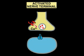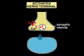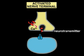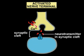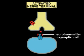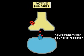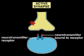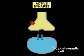The increased calcium in the nerve terminal stimulates synaptic vesicles to fuse with the plasma membrane, releasing their neurotransmitter cargo into the synaptic cleft. The released neurotransmitters diffuse across the synaptic cleft, where they bind to and open the transmitter-gated ion channels in the plasma membrane of the postsynaptic cell.